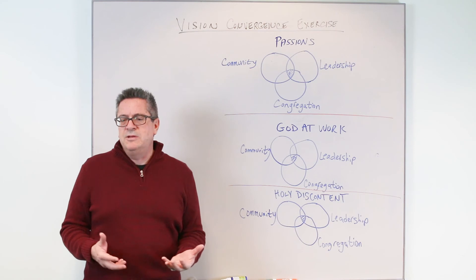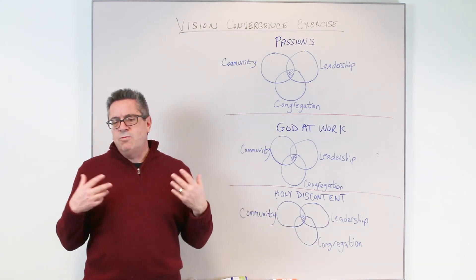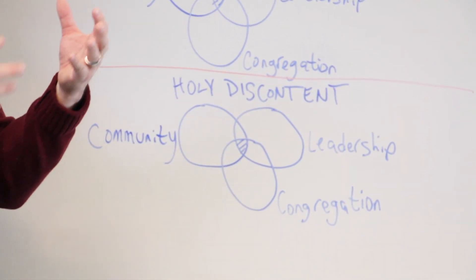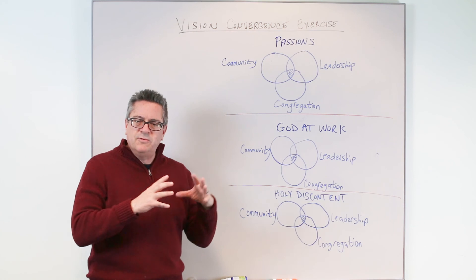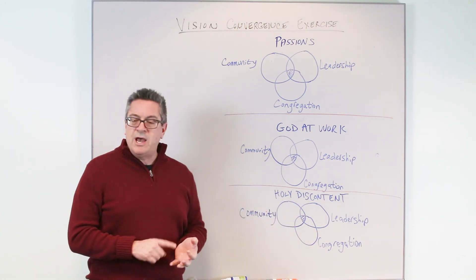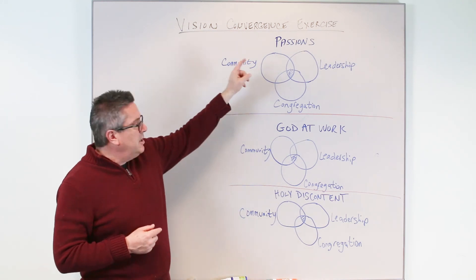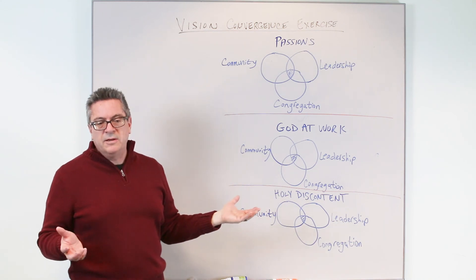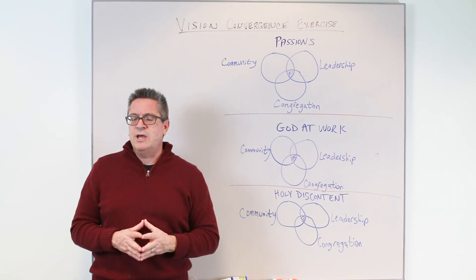Maybe there needs to be an emphasis on deeper stewardship. As you think about your leadership team, what are those things that bring a holy discontent — where something is one way but you know it should be another? We want to find where there's overlap between what's happening in the community, the church, and the leadership. If you do that with passion areas, with how you see God at work, and with areas of holy discontent, then you're beginning to see a picture of the vision God will place before you. That is the vision convergence exercise.